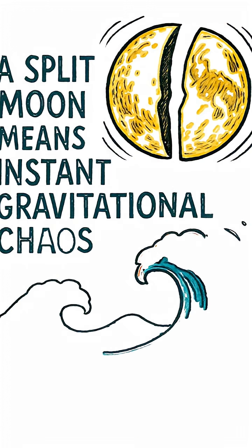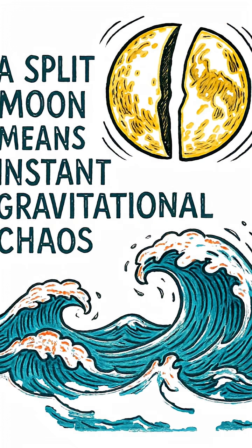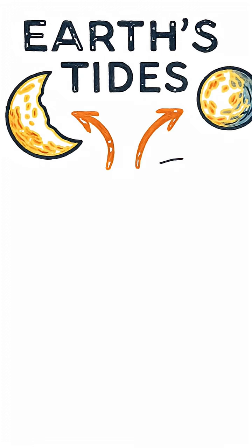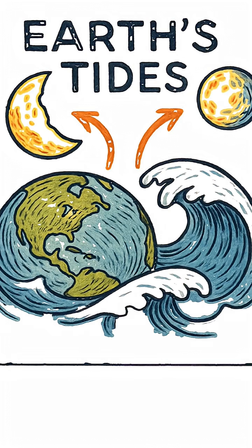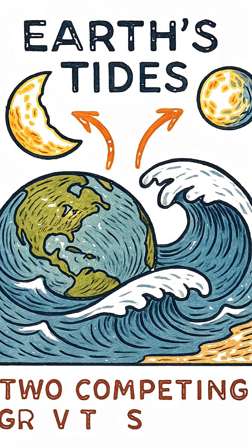A split moon means instant gravitational chaos. Earth's tides, once governed by a single lunar pole, are now at the mercy of two competing gravity sources.